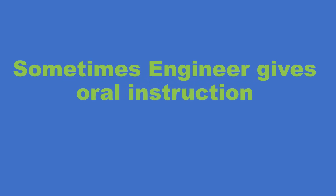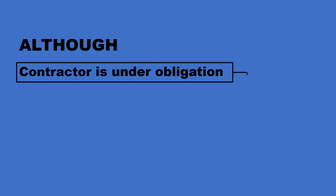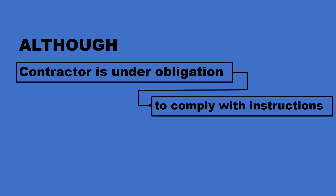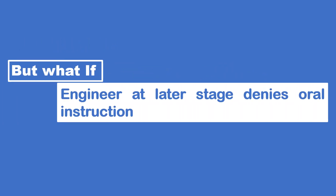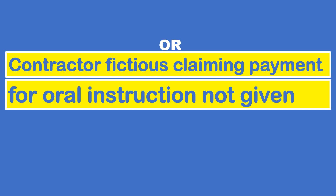There may be situations in construction where the engineer issues oral instructions. Although the contractor is under obligation to comply with oral instructions of the engineer, a situation may arise where the engineer at a later stage denies having given those oral instructions. There is also a risk of the contractor fictitiously claiming payment for oral instructions which have not actually been provided by the engineer.